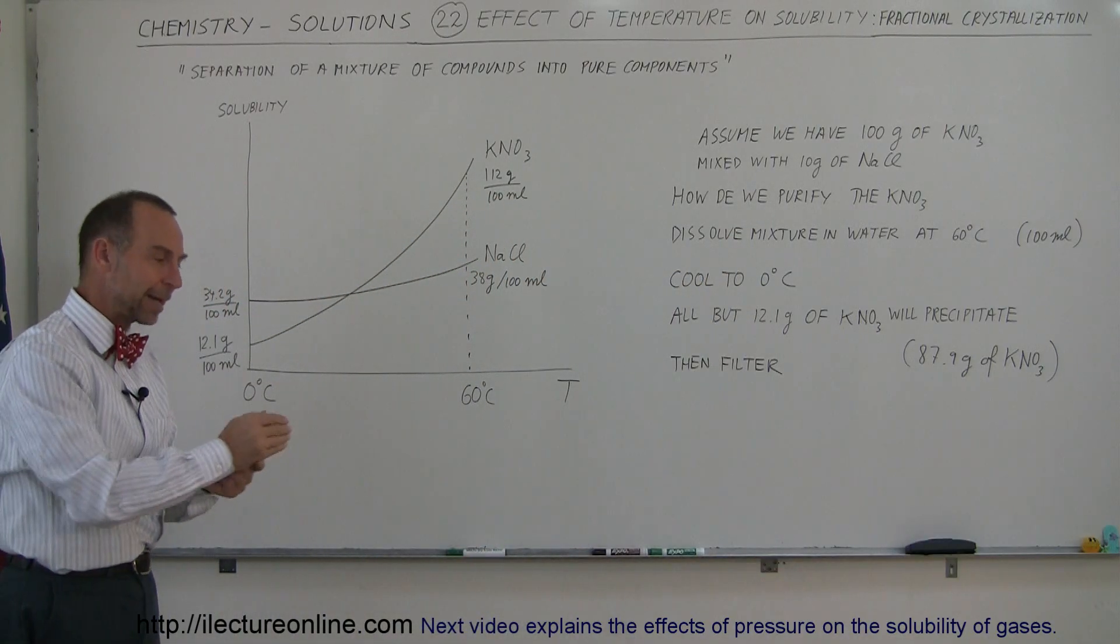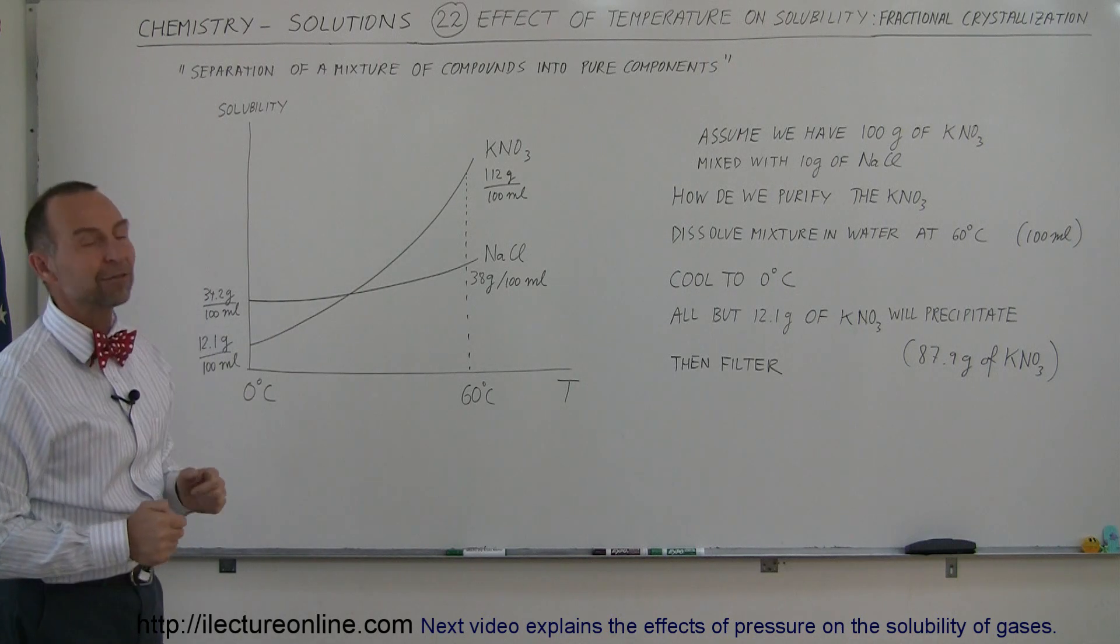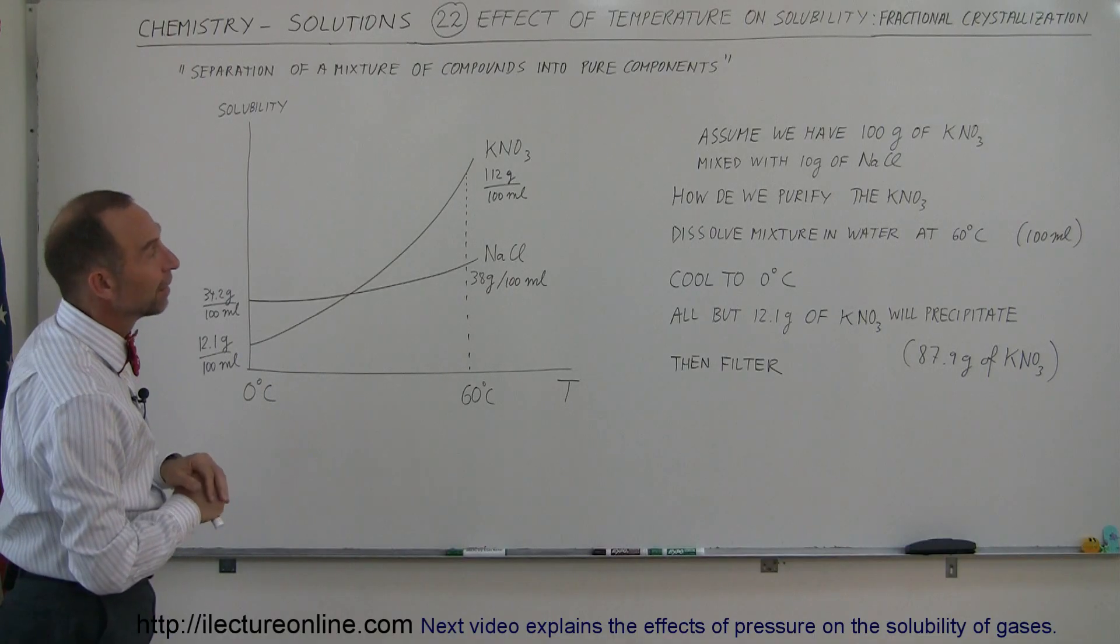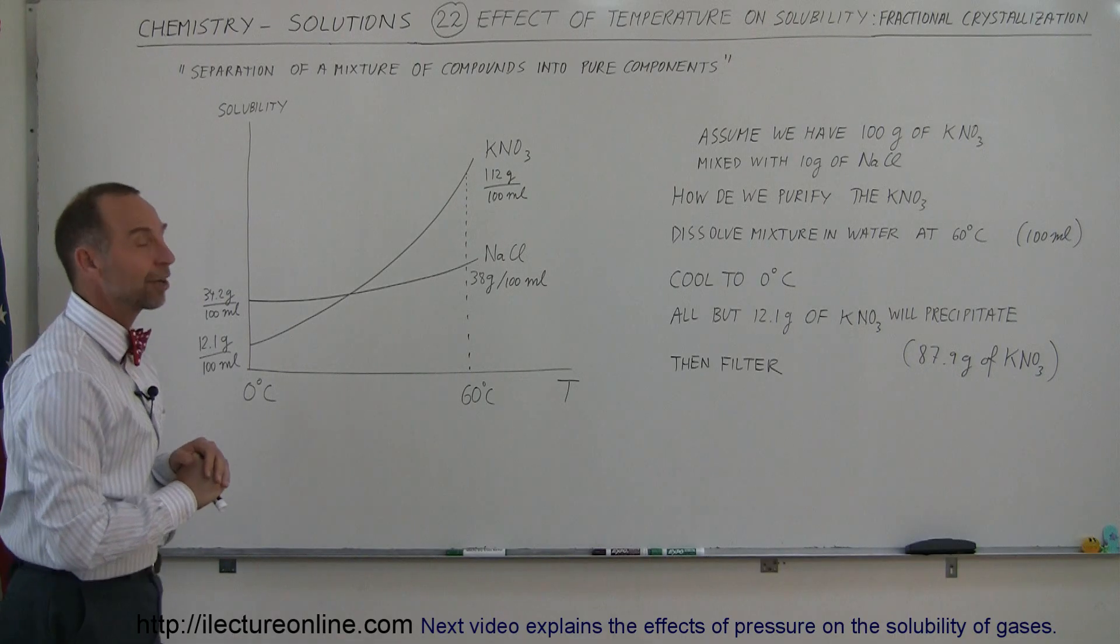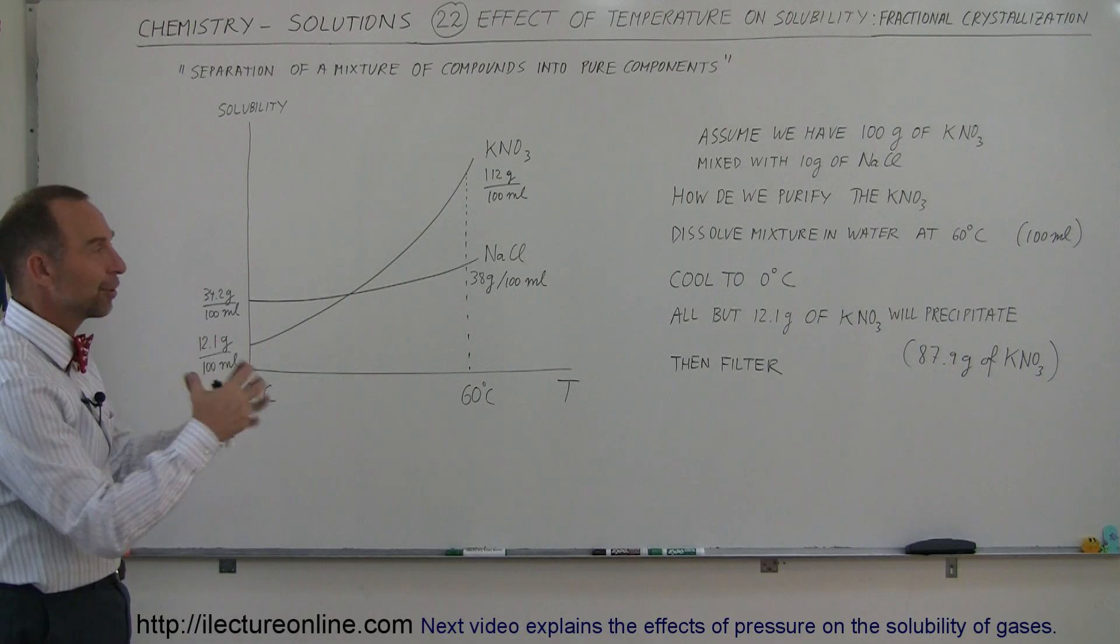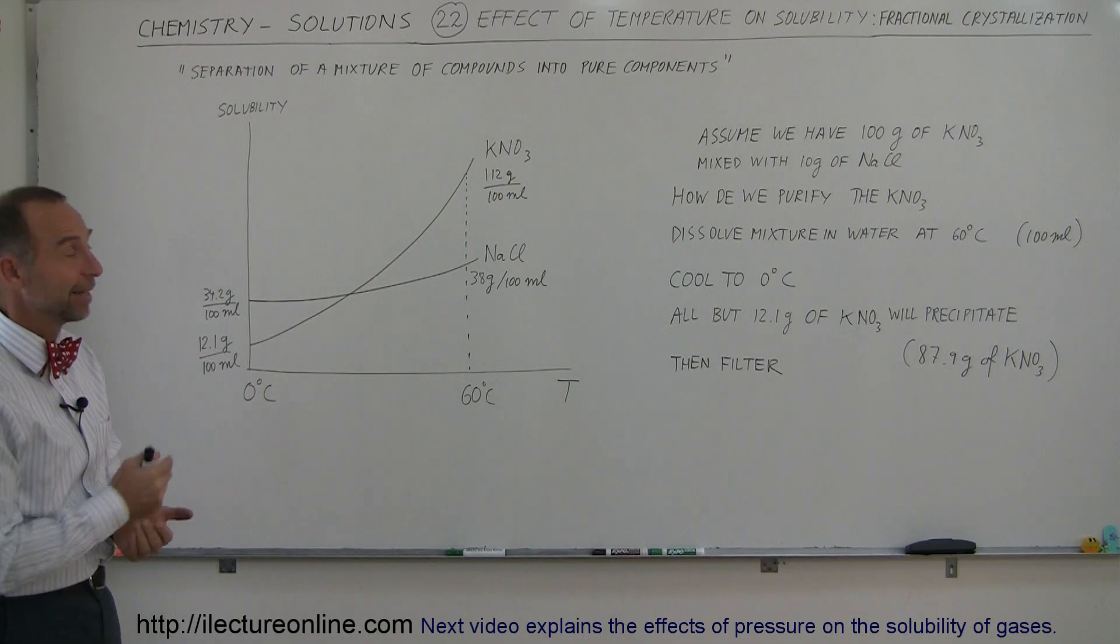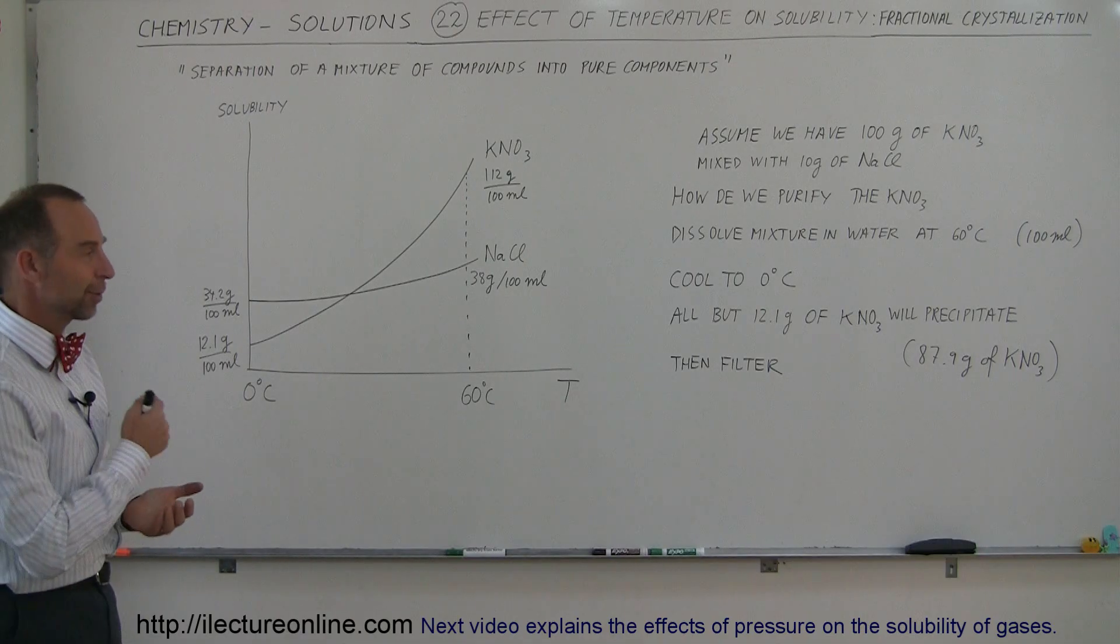And then, after you dry it and put it back into a container, you now have almost 90 grams of potassium nitrate that is now being freed from the sodium chloride. And so that would be the way in which you can actually figure out how to take the potassium nitrate out of your contaminated mixture that now also had sodium chloride in it. And that's how you use what we call fractional crystallization to accomplish that.